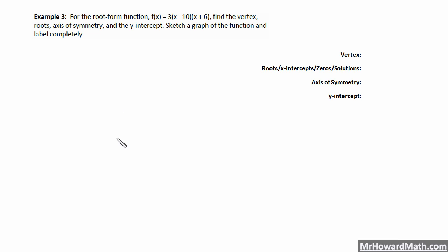Here is example three. We have the root form function — see video one for a description of the different forms — but it gives us f of x equals three times x minus 10 times x plus six. Find the vertex, roots, axis of symmetry, and y-intercept, then sketch a graph of the function and label it completely.